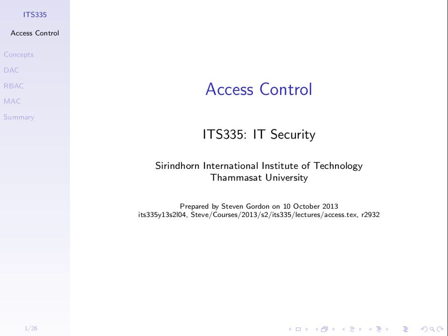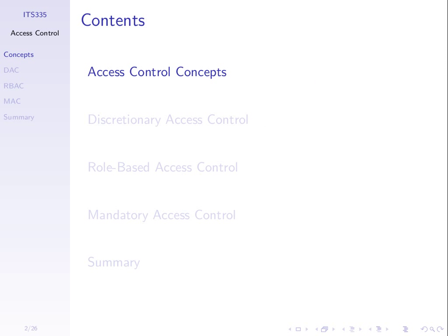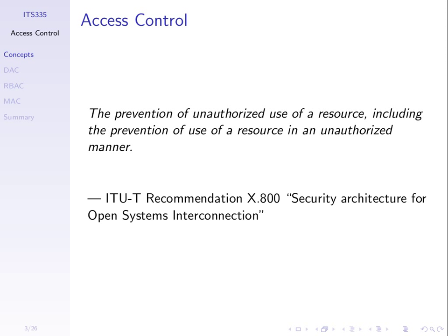Access control is the prevention of unauthorized use of a resource, including the prevention of the use of a resource in an unauthorized manner. We have resources on our computer system, and we want to prevent people and software that are not authorized to use those resources from doing so. That's the basics of access control — controlling who can access those resources.